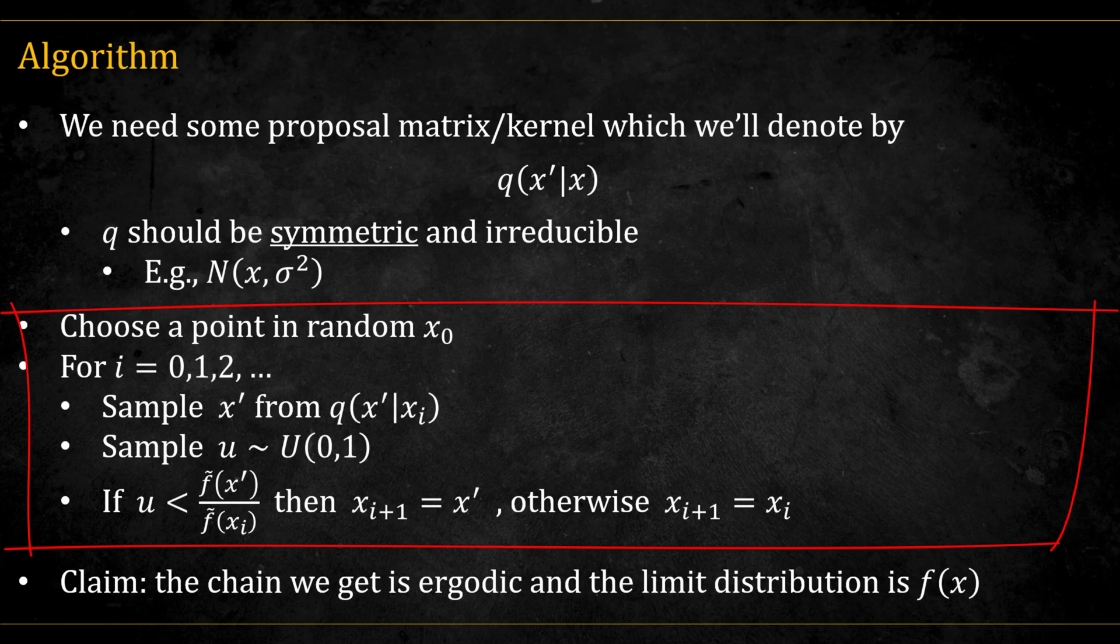The algorithm is as follows. Starting at a random point x_0, and for as many samples as we wish, sample a proposed new point from the kernel given the current point. Also sample a uniform value u between 0 and 1. Calculate the ratio between f tilde of the new point and f tilde of the current point. If u is less than this ratio, accept the point as the new point. Otherwise set the point to be equal to the last point.